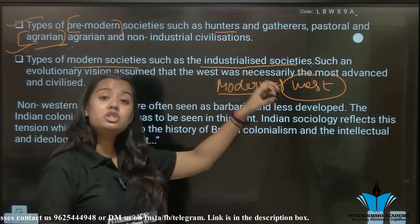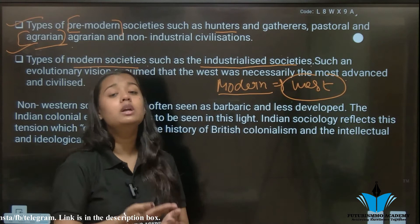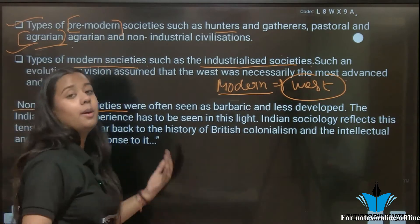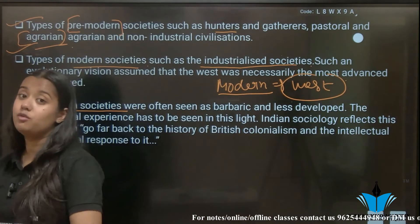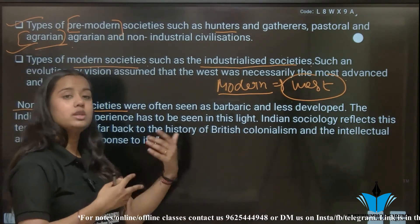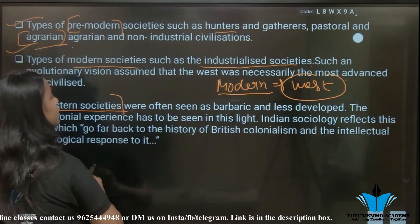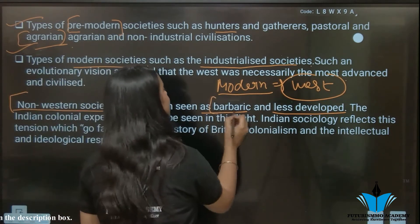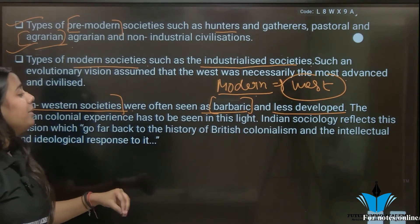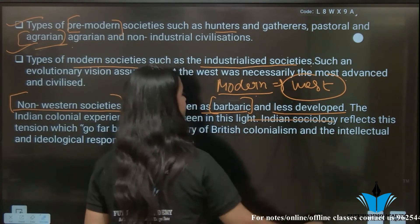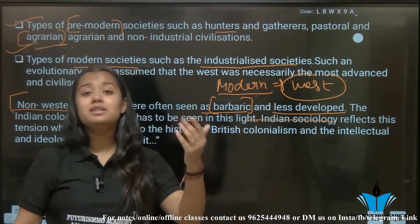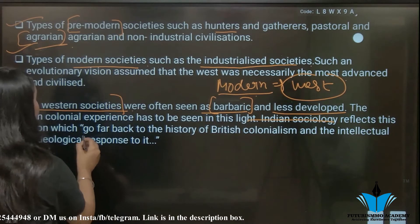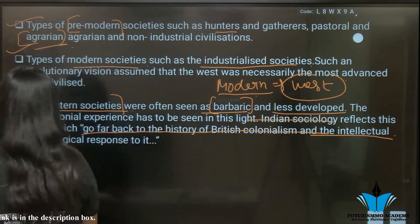Our modern society developed as industries were established. People who were non-western societies — like we were in India — were also influenced by them and adopted their ways. Non-western societies were considered barbaric and less developed. This is the same thing that happened in India: we were first less developed, then we developed, and now we are a developing country. These tensions go far back in history to British colonialism and the intellectual and ideological responses to it.